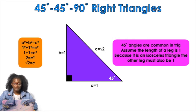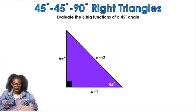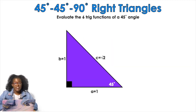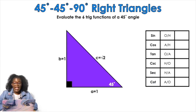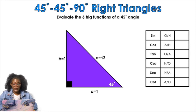Because these are common values, the trig ratios of a 45-45-90 right triangle are frequently used, so it's good to be familiar with them. Looking at the six trig functions of this 45-degree angle: sine is opposite over hypotenuse, so that's 1 over the square root of two. When I rationalize that, I get root two over two as my sine ratio.